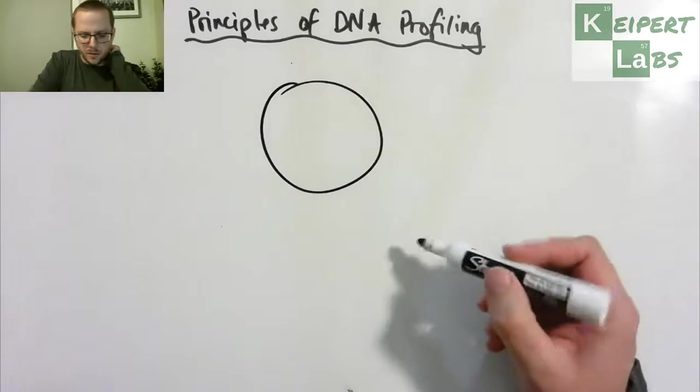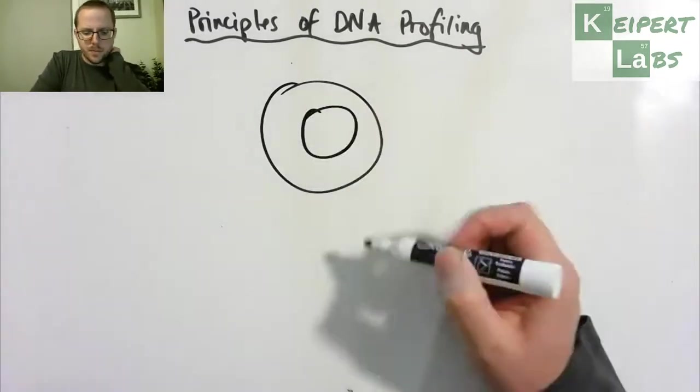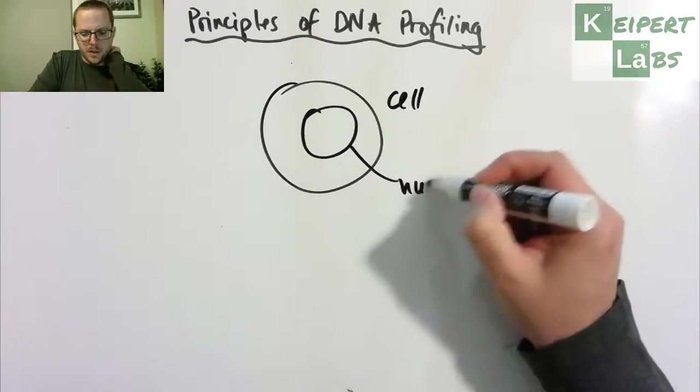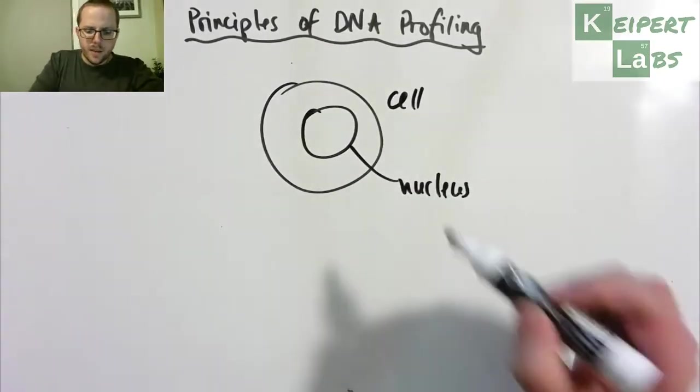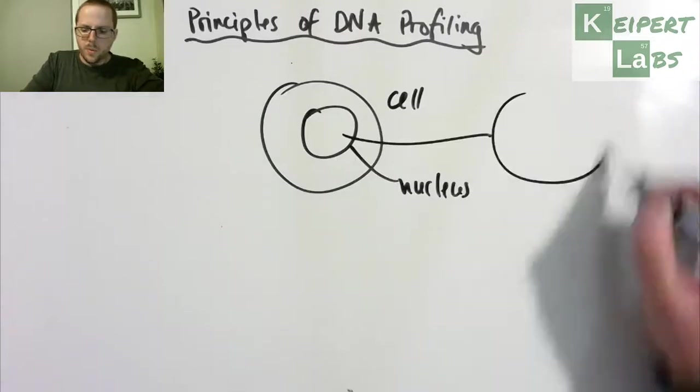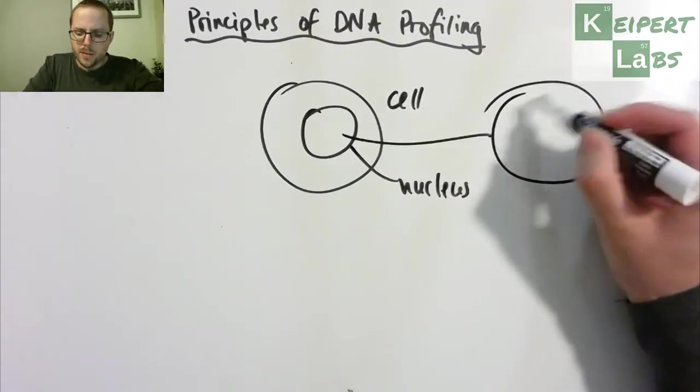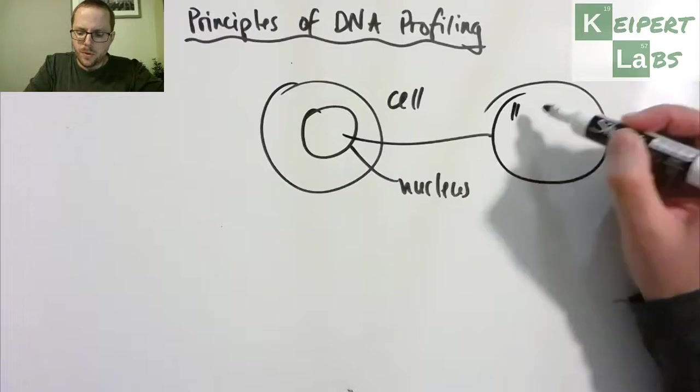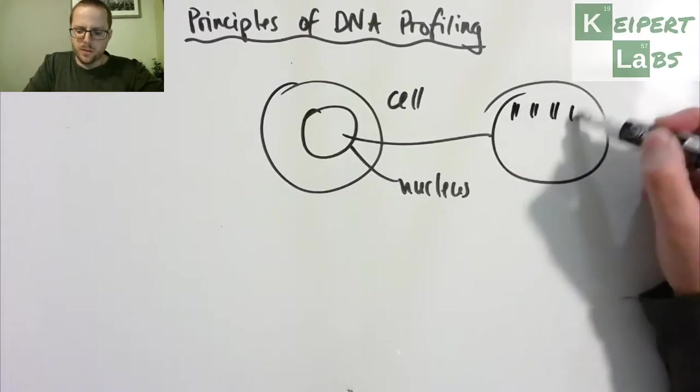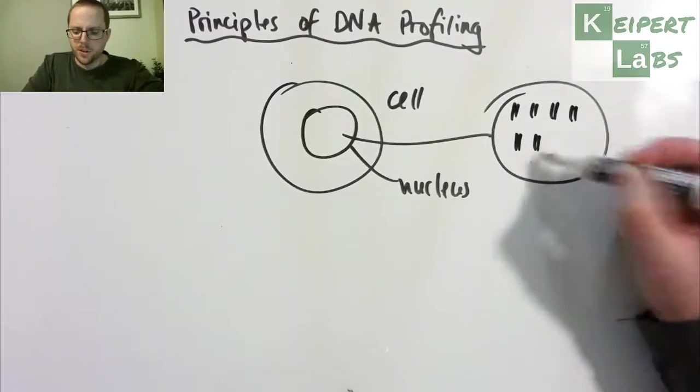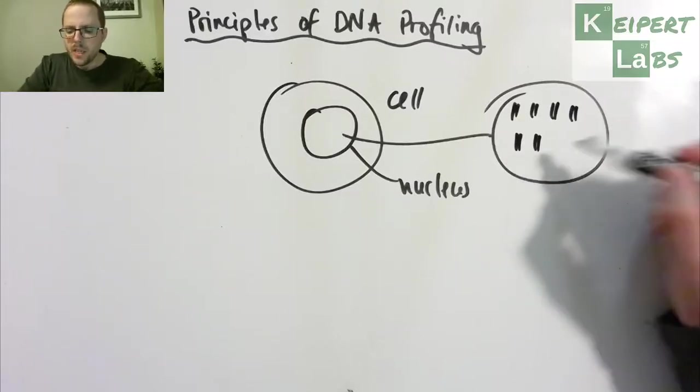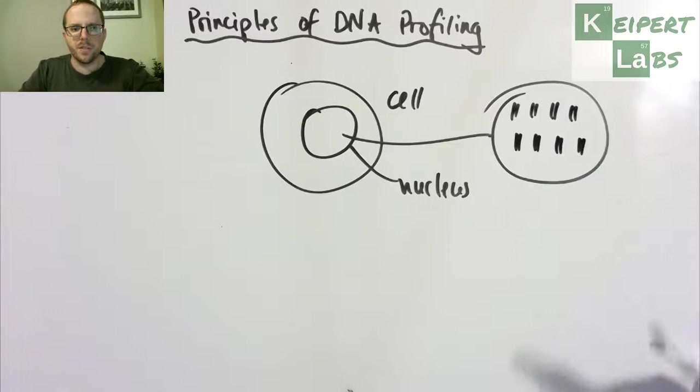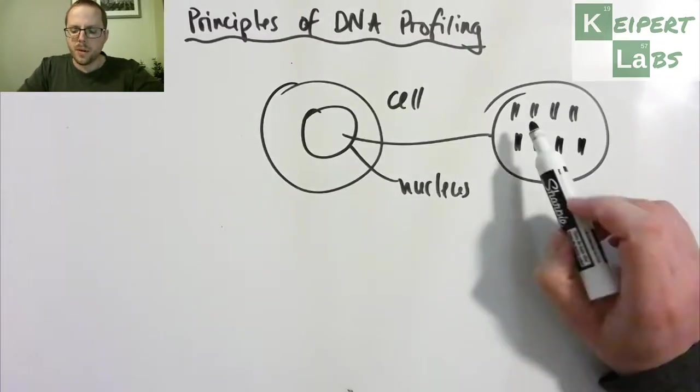Okay, this is our cell, this is our nucleus, where the DNA is located. Inside that nucleus we have 23 pairs of chromosomes. This is a gross simplification and I'm not going to bother going through all 23, but the idea being that inside each of the cells in your body that have a nucleus there are 23 pairs of chromosomes.